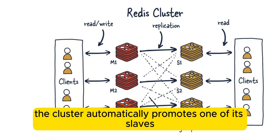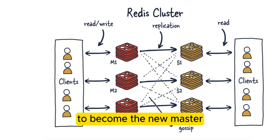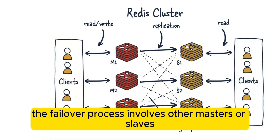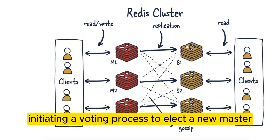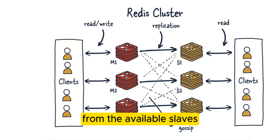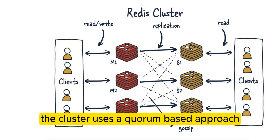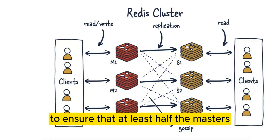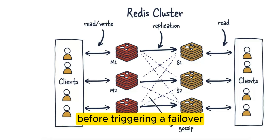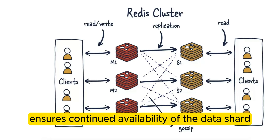When a master node fails, the cluster automatically promotes one of its slaves to become the new master. The failover process involves other masters or slaves initiating a voting process to elect a new master from the available slaves. The cluster uses a quorum-based approach to ensure that at least half the masters acknowledge the failure before triggering a failover. The promotion of a slave ensures continued availability of the data shard.